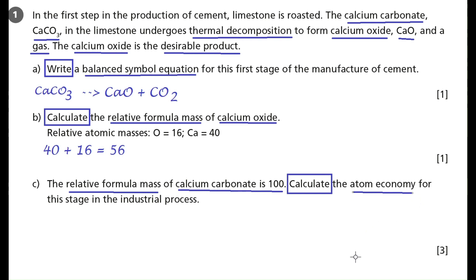Now, atom economy is a measure of how many atoms in the reactant make it into the useful product. So it's the mass of the useful product divided by the mass of the sum of your reactants times by 100. As before, I would very much recommend doing all of the workings out. So, we're going to do the mass of the desirable product, which is 56. We're going to divide that by the mass of all the reactants, which in this case is 100. And then we need to times that figure by 100 to make it a percentage. And you're going to get an answer of 56%. Now, where are the marks?